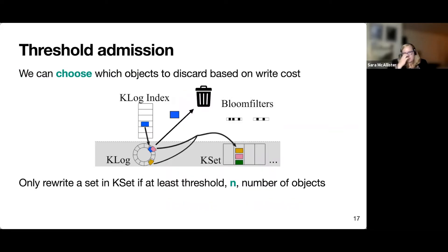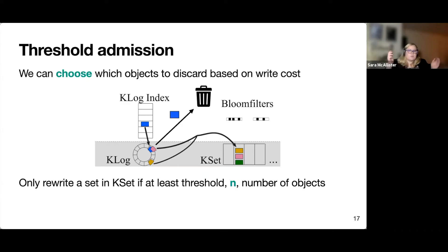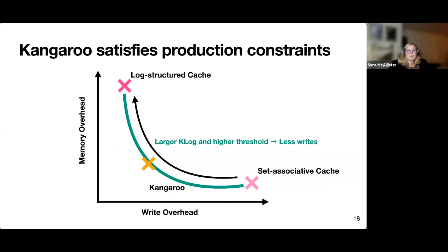We can do even better by implementing a threshold admission policy, which takes advantage of the fact that in a cache we can discard objects when they're not valuable. If an object has no other match to move it to KSet, it would incur a really high write cost. So rather than move it, we implement a threshold — say two — where if we don't have at least two objects to write to a set, we evict those objects instead. Having amortized writes plus this threshold allows a lower write overhead, potentially at the expense of higher memory overhead with a larger KLog, but we can choose where along that curve we want to be.